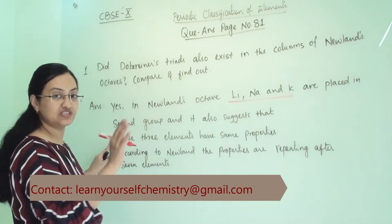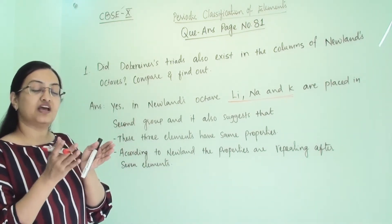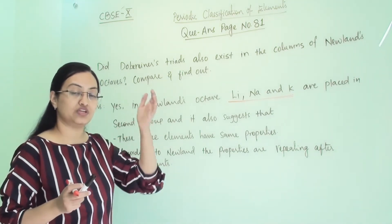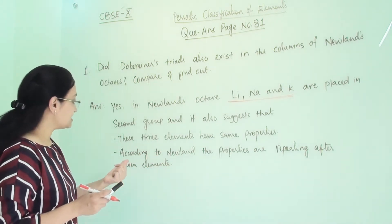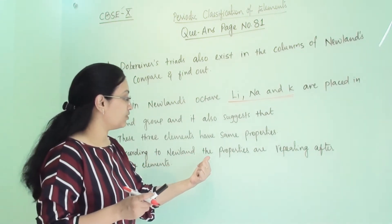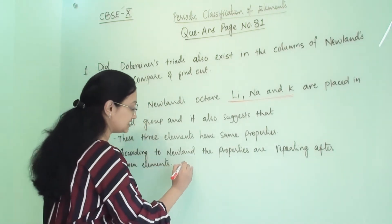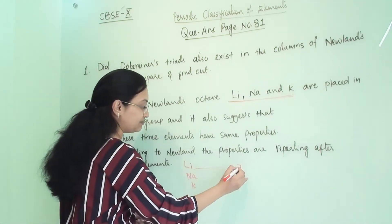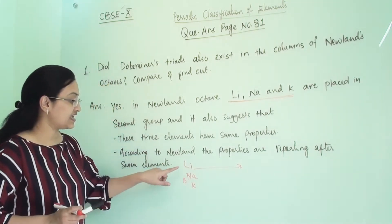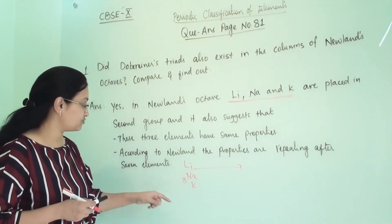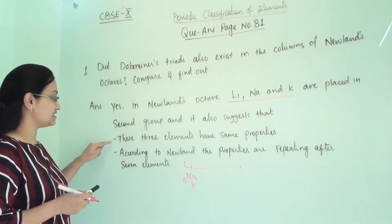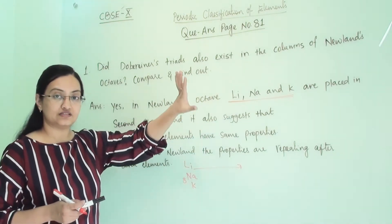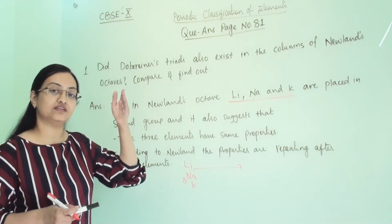These three elements have the same properties — that is why Dobereiner placed them in the same triad, and in Newland's octave they are also in the same group. According to Newland's octave law, properties repeat after every seventh element, so lithium, sodium, and potassium follow this pattern. Dobereiner put these three elements in a triad and Newland put them in the same group.